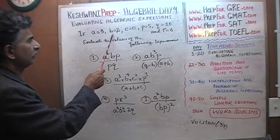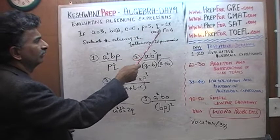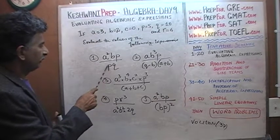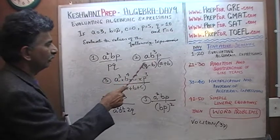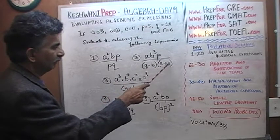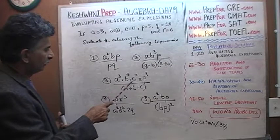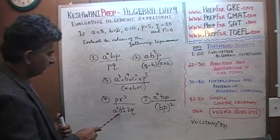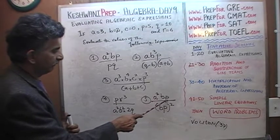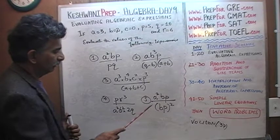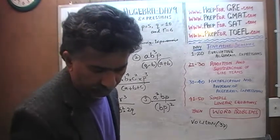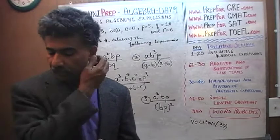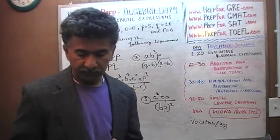If A equals 3, B equals 2, C equals 0, P equals 5, Q equals 10, and R equals 6 — what are the values of these expressions? I'll give you a few seconds to pause and unpause the video as usual, because I want you to solve these things yourself first, come up with the answers, and then do it again with me and see if you get the same answers.